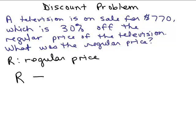When it says 30% off of the regular price, it means it's going to take 30% off the regular price, not the 770. So how do you write 30% as a decimal? That will be 0.3. It's not just 0.3, it's 30% of the regular price, 0.3R.